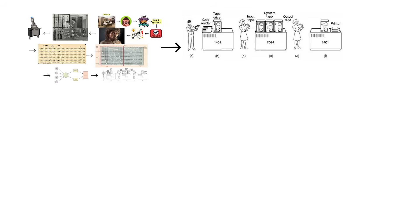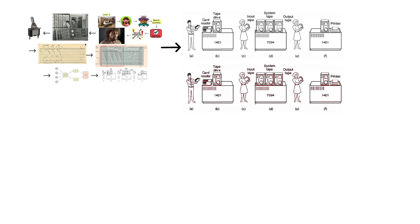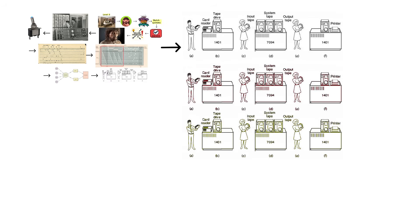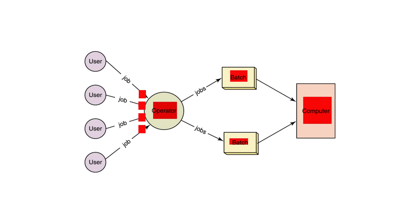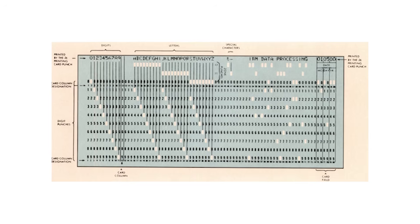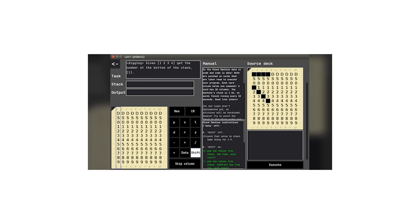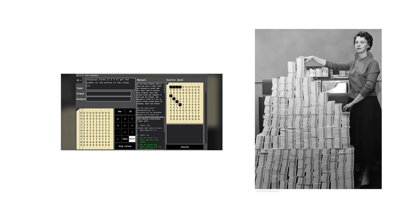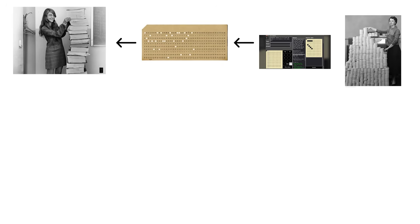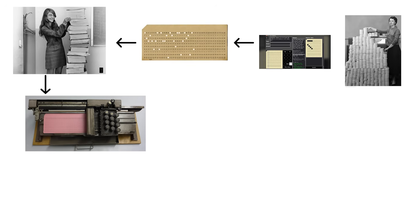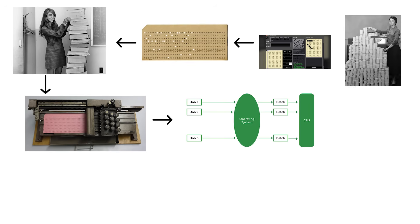The computer would run job 1, finish, automatically load job 2, finish, load job 3, and so on. This was revolutionary for the 1960s. Now the computer could run for hours without human intervention. Programmers would submit their punch card decks in the morning, go do other work, and come back later to collect their output printouts. Turnaround time went from minutes to hours, but at least the expensive computer was actually being used efficiently.